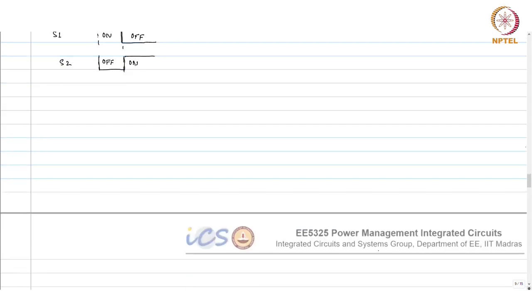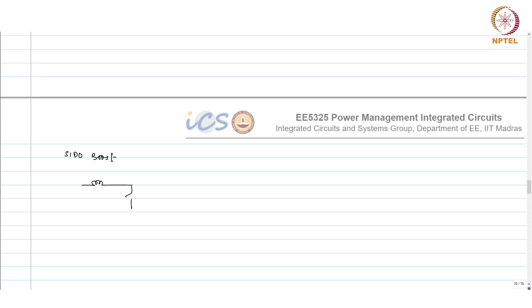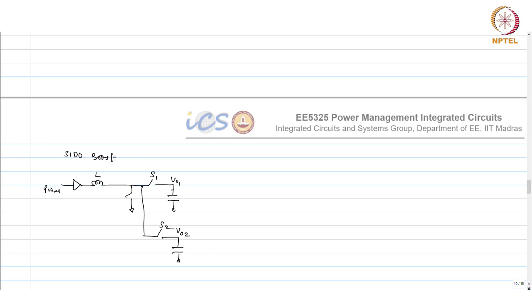For the boost SIMO, starting from a single-output boost topology, you add a second output switch. In one cycle the inductor charges and supplies current to S1; in the second cycle the charge is diverted to the other output.